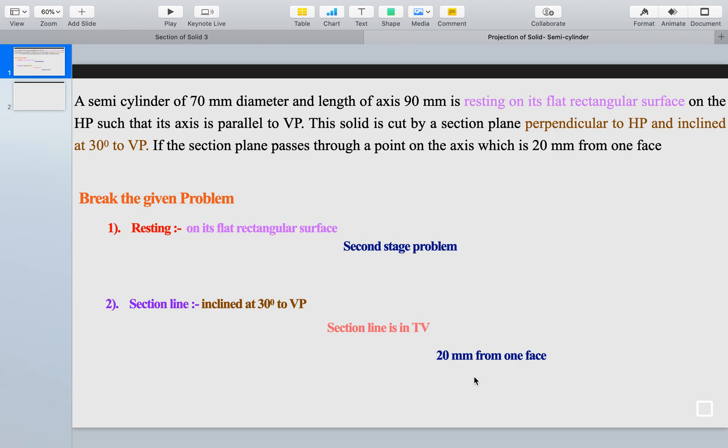Now we will read the question. A semi-cylinder of 70mm diameter and length of axis 90mm. The diameter and height they have given is resting on a flat rectangular surface.